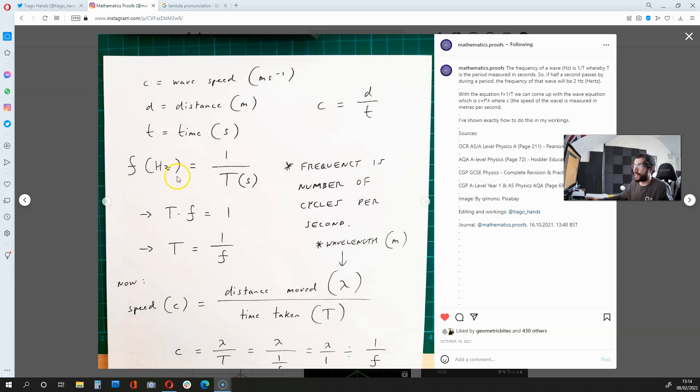Now, what we should do next is manipulate the frequency equation. At the moment, we have 1 over t. If we multiply both sides of this equation by t, we get t times f equals 1. And then from here, if we divide both sides of this equation by f, we get t equals 1 over f.